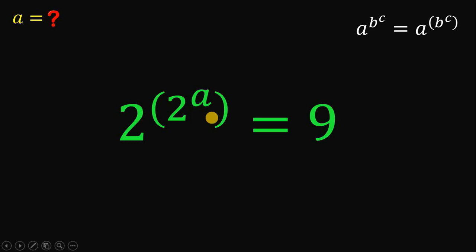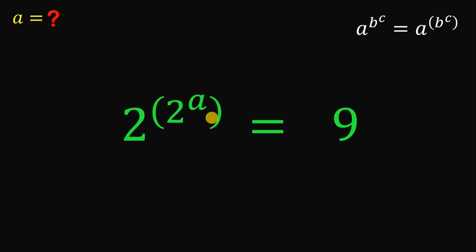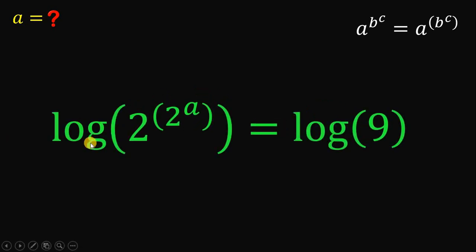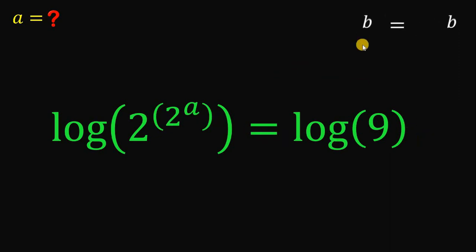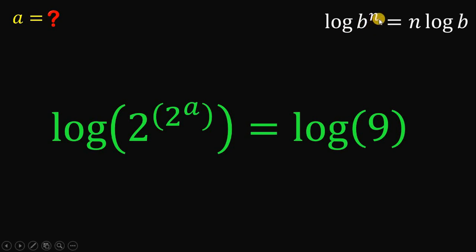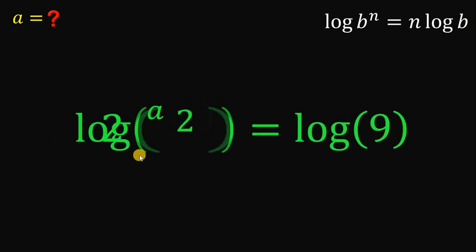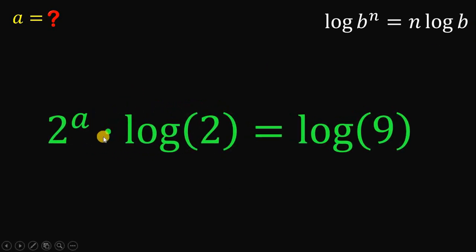And now, the only way to answer this question is to use logarithm. So, let's get the logarithm on both sides. We have logarithm of 2 raised to 2 raised to A equals logarithm of 9. Take note that if we have logarithm of B raised to the power of N, it is equivalent to N multiplied by the logarithm of B. Therefore, the left-hand side can be written as 2 raised to A multiplied by the logarithm of 2.